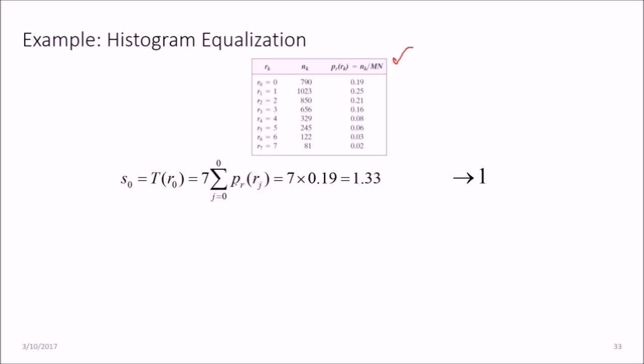The next step is, we multiply the level. What is the level? That is 7. So we multiply 7 by 0.19, that is 7 into sigma 0 to 0 p_r(r_j). In the first case it will be 0.19 only, that is we multiply 7 by 0.19, that is 1.33.